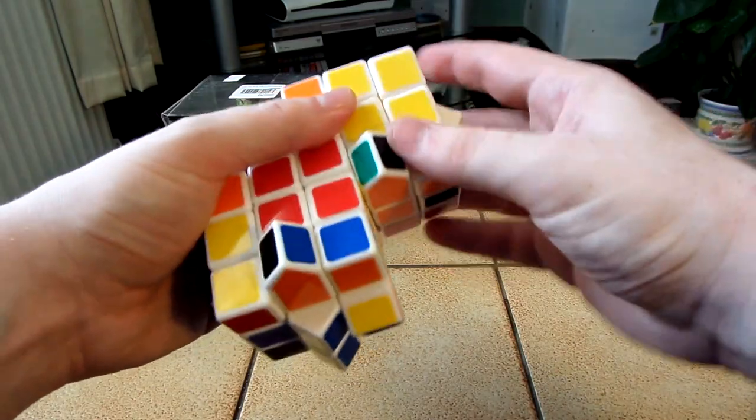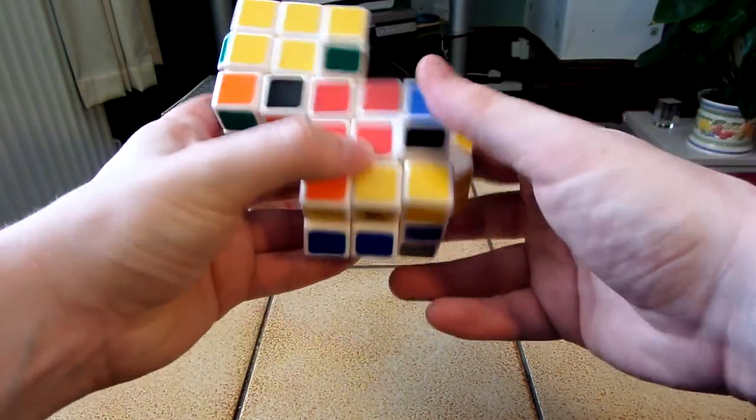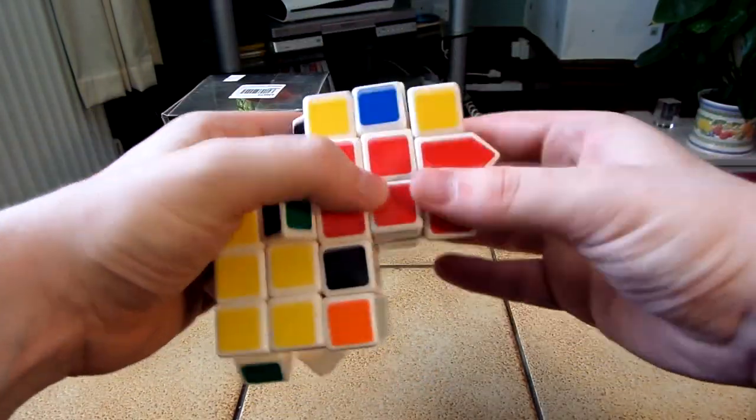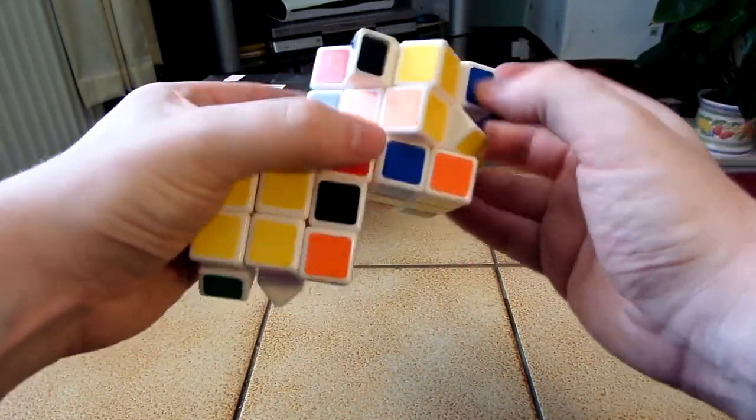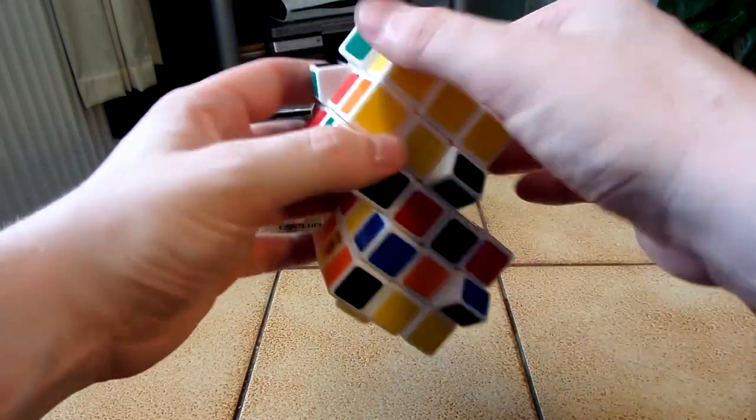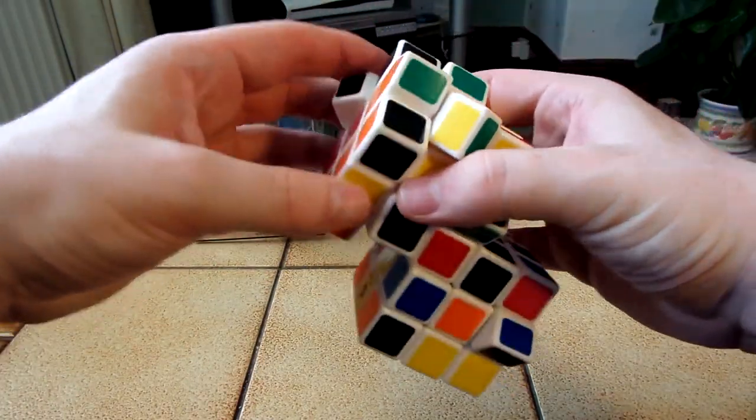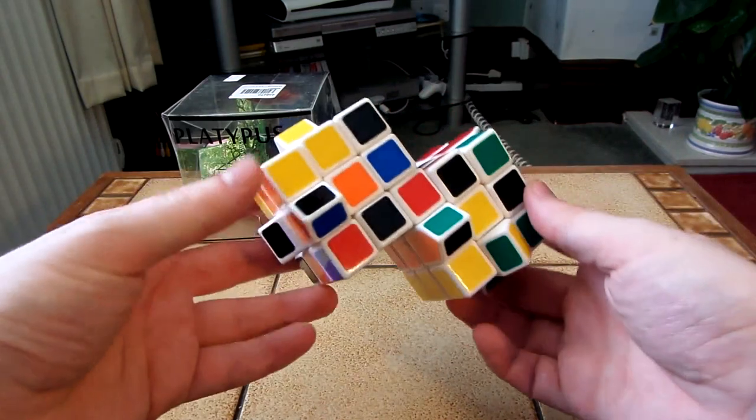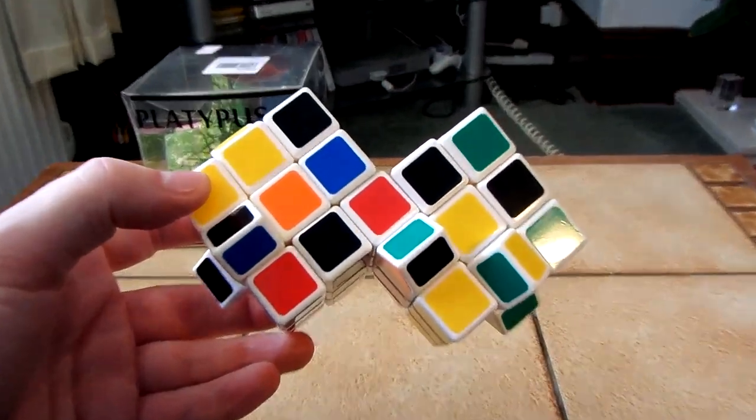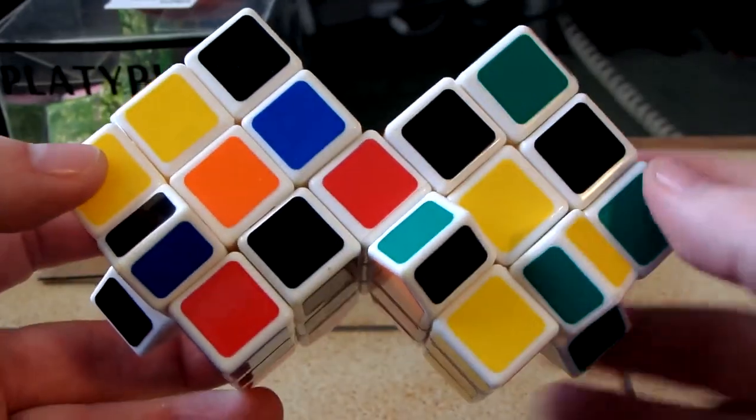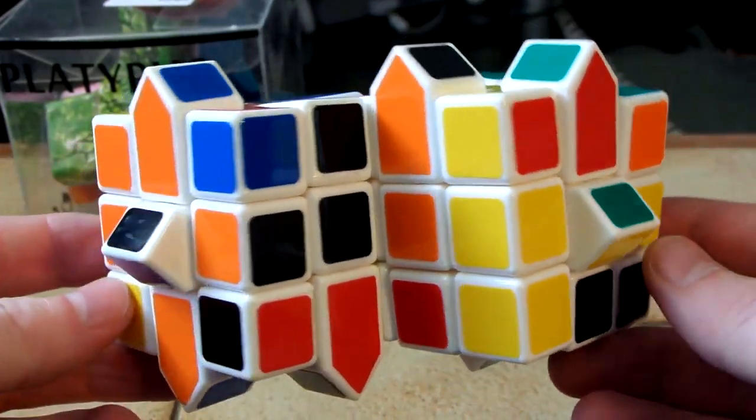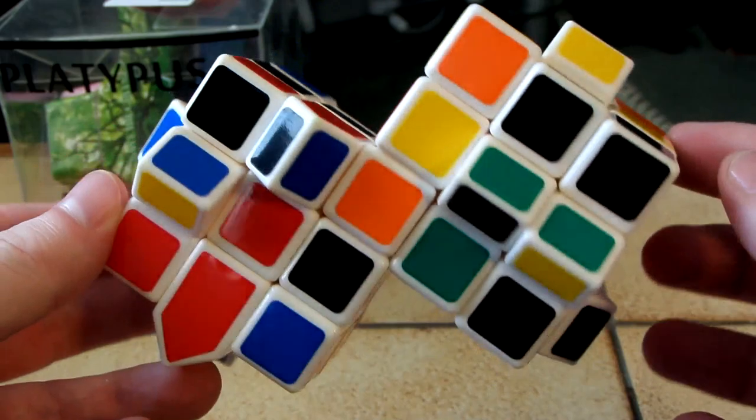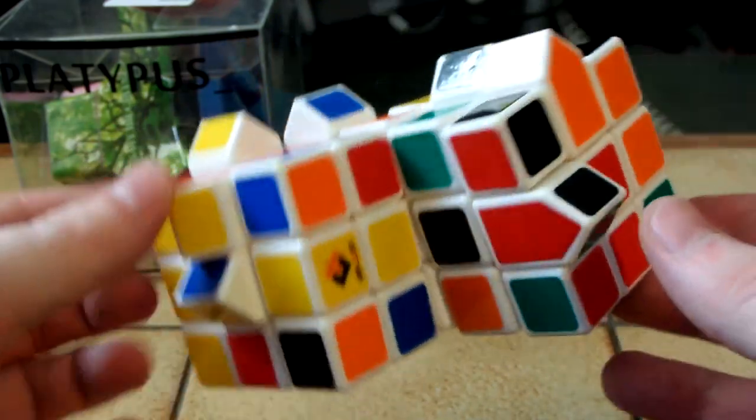Yeah, the layers are catching a bit. I guess that will do. There is a scrambled Siamese 3x3 shape mod. Looks quite cool.